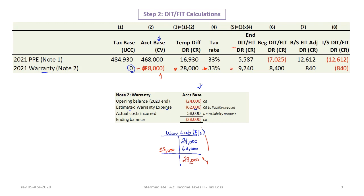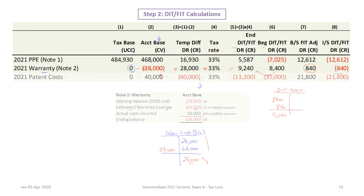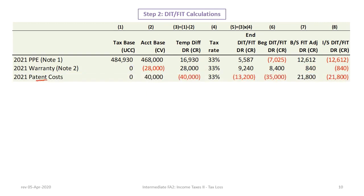The beginning deferred tax balance for warranty was eight thousand four hundred. To go from eight thousand four hundred to nine thousand two hundred and forty, we need an adjustment of eight hundred and forty dollars — a debit to the deferred tax asset for warranty and a credit to the income statement.